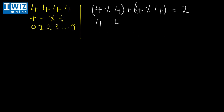Now let's try and get to three using four fours. That can be done by adding four plus four plus four, which gives twelve, and then dividing that by four, which gives three.